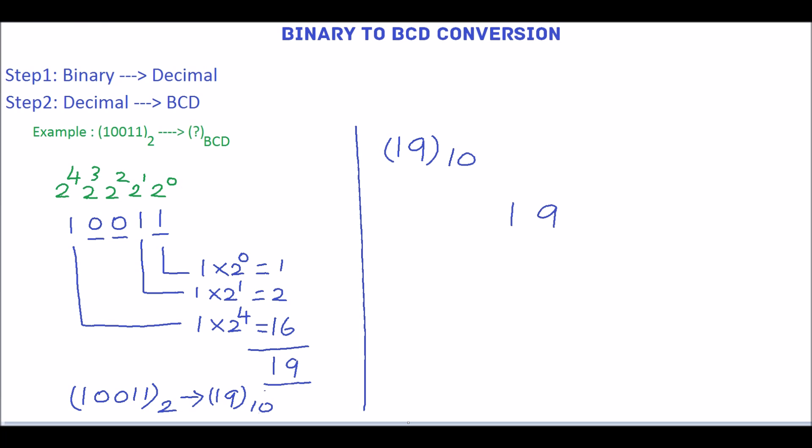First, we will write this decimal digit 9 into 4 bit binary which is 1001.